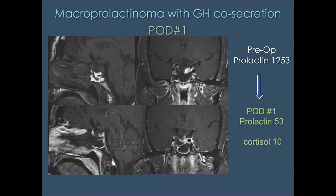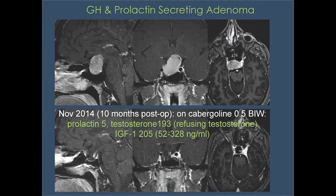On post-operative day one, his prolactin dropped by more than 95% — from 1,200 down to 53 — with a normal cortisol level indicating good gland function. Ten months out, he's on a very low dose of cabergoline with a normal prolactin of five, and his IGF-1, which was elevated, is now right in the normal range. The gland and vision have recovered, and this case illustrates the importance of the neurosurgeon and endocrinologist working together as a team.